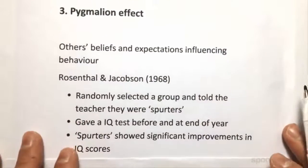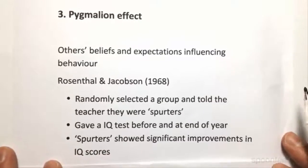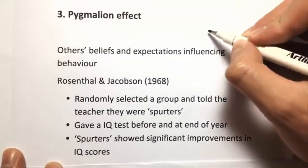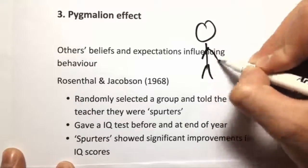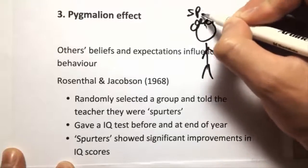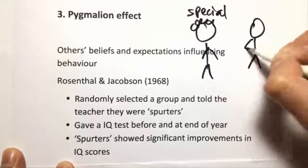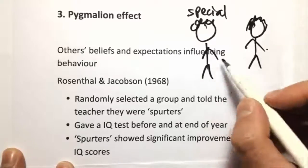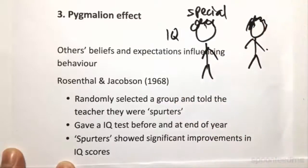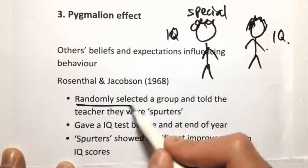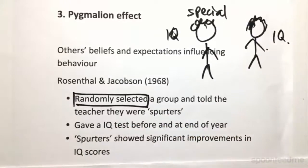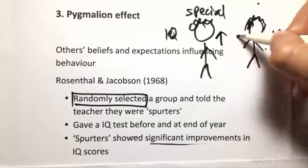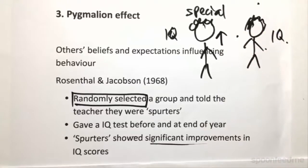The Pygmalion effect is the same, but to do with the way others perceive us. Teachers were told that a specific group of children were special in some way — brighter than average — when they were actually just normal kids. The teachers gave them an IQ test at the start and end of the year, and even though they were randomly selected with nothing special about them initially, they showed more significant improvements in IQ scores than the normal group. This again shows a change in behavior as a result of others' beliefs and expectations.